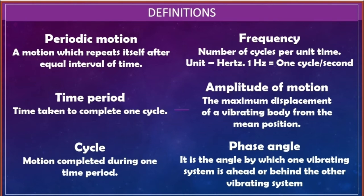The unit of frequency is hertz. One hertz is equal to one cycle per second. Fifth, amplitude of motion: defined as the maximum displacement of a vibrating body from the mean position. Sixth, phase angle: the angle by which one vibrating system is ahead of or behind another vibrating system is known as phase angle.